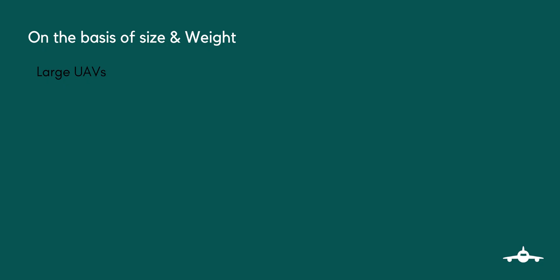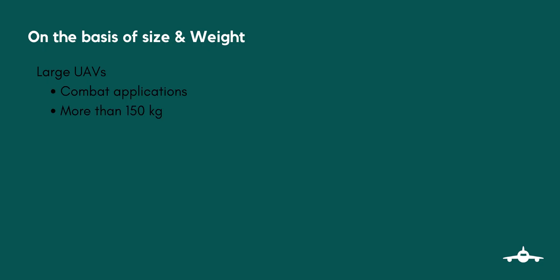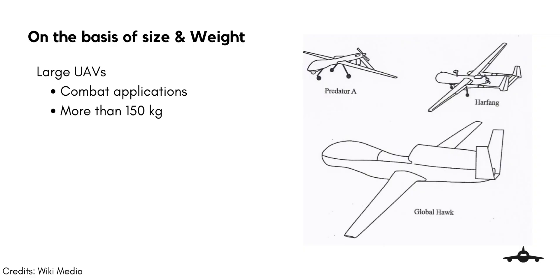Large UAVs are used mainly for combat operations by the military. They weigh more than 150 kg. Examples of these large UAVs are the US General Atomics Predator A and B, and the US Northrop Grumman Global Hawk.